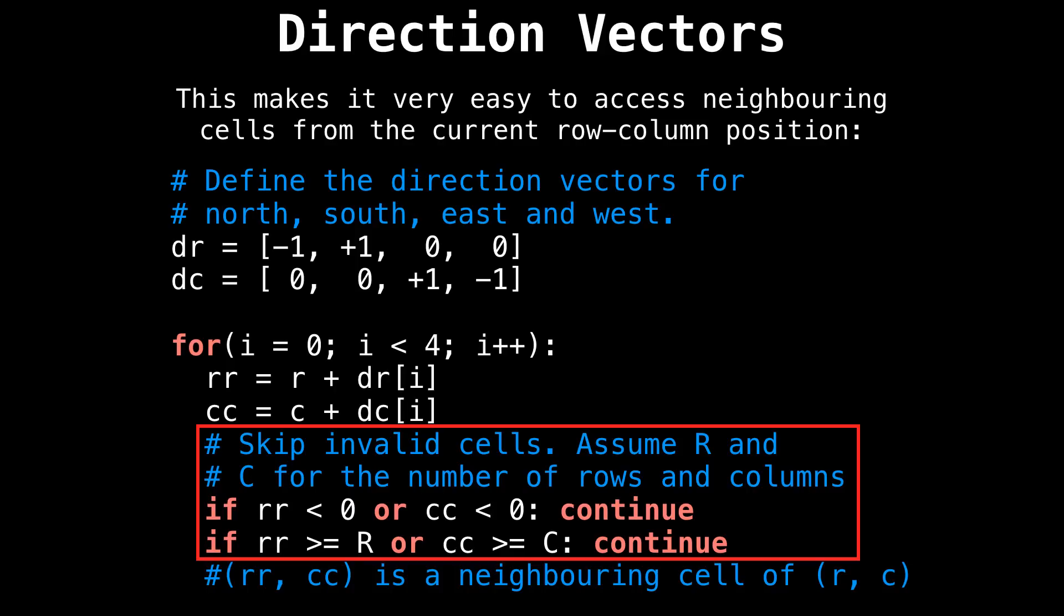However, it might not be an adjacent cell if we're on the border of the grid and the new position is out of bounds. So we check that the new coordinate is within our grid by making sure that the new row-column position is greater than or equal to zero and doesn't exceed the number of rows and columns of our grid, respectively.